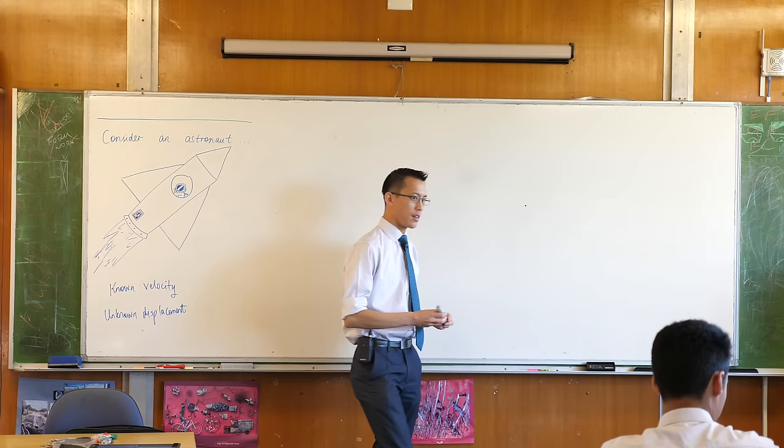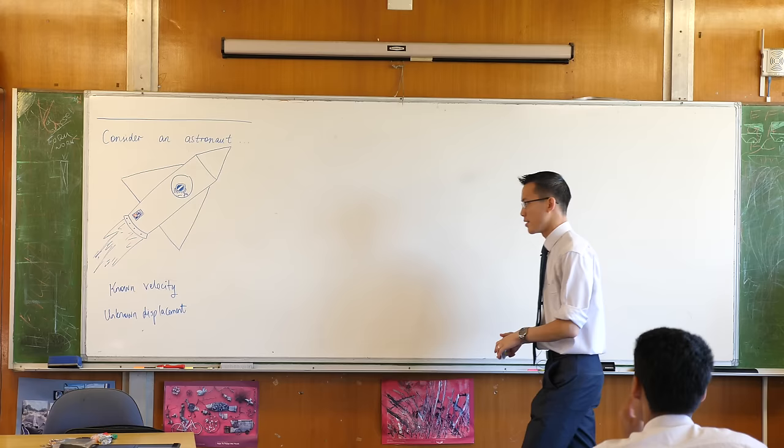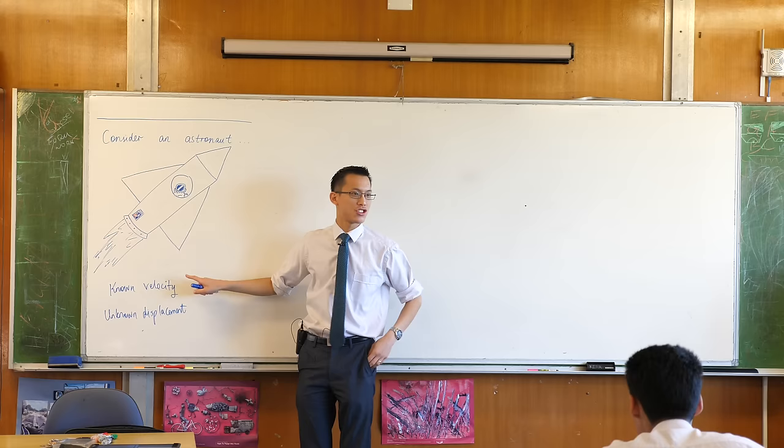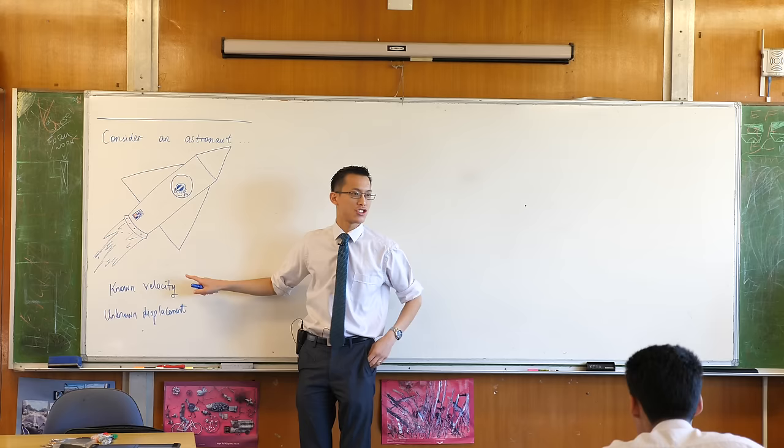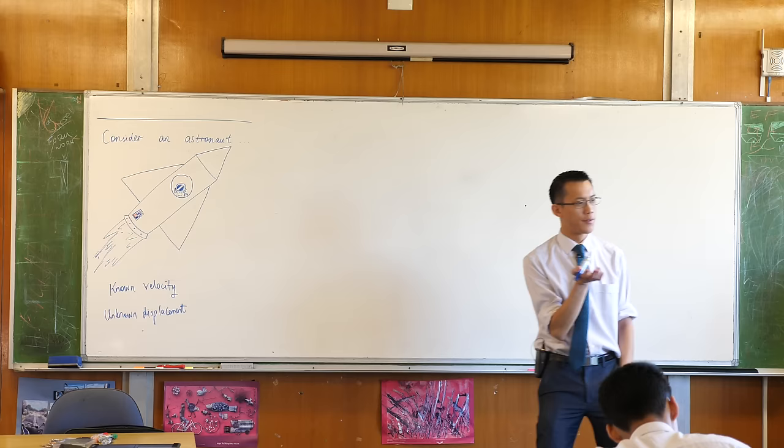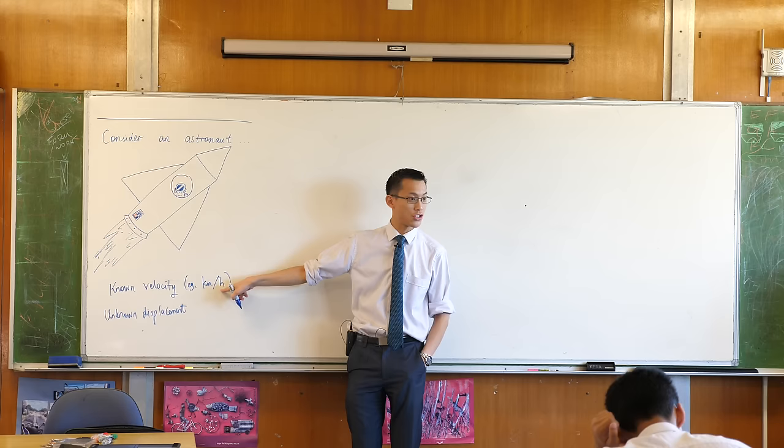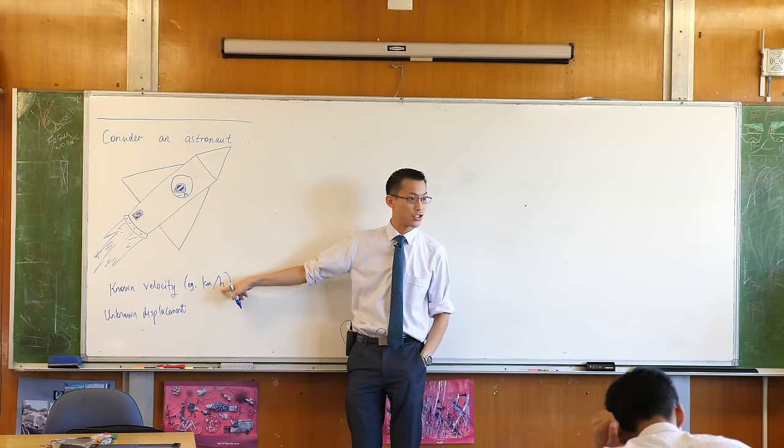Now I point this out because what we've been doing so far in calculus has been the reverse of this, right? We know some kind of quantity, like a position, or how much water is in a tank, or something like that, and we want to work out from that, how is that changing? And velocity is just how displacement is changing over time. So velocity, things like kilometers per hour.